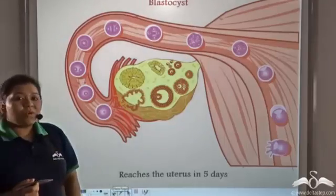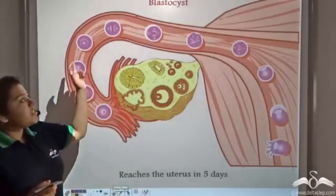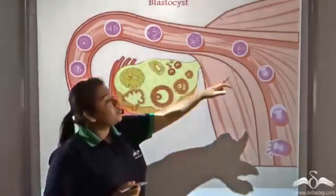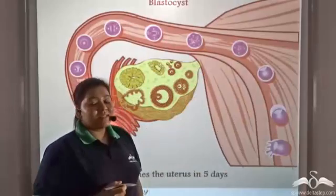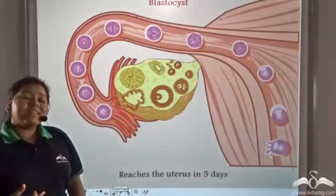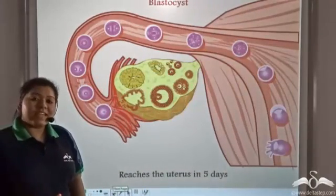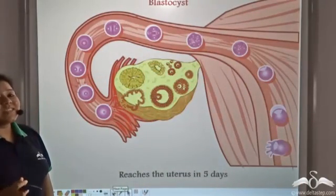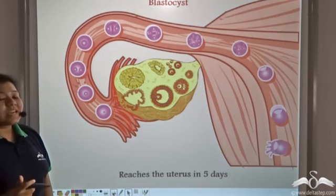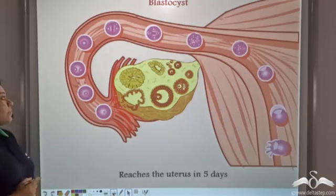The zygote reaches the uterus in five days. Within these five days, a number of changes take place in the zygote.